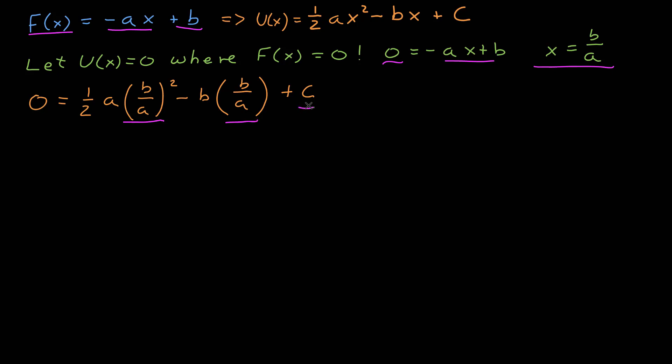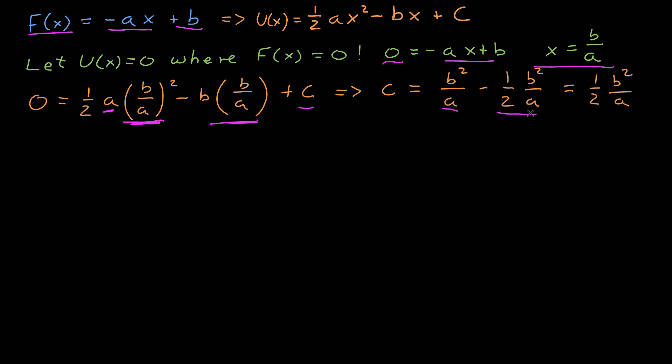I put x equals b over a into my potential energy, which I've defined to be zero at that location: one-half a times (b/a)² minus b times (b/a) plus c equals zero. Multiplying out, I get one-half b squared over a, and here I have b squared over a. Bringing those to the other side gives positive one-half b squared over a for c. So the potential energy function is one-half ax squared minus bx plus b squared over 2a.